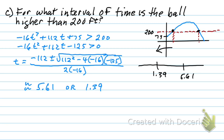What do y'all want to do? 3? Okay, so I'm going to plug that into my original inequality up here. So I'm going to say negative 16 times 3 squared plus 112 times 3 plus 75, is that greater than 200? That's the question we're asking.